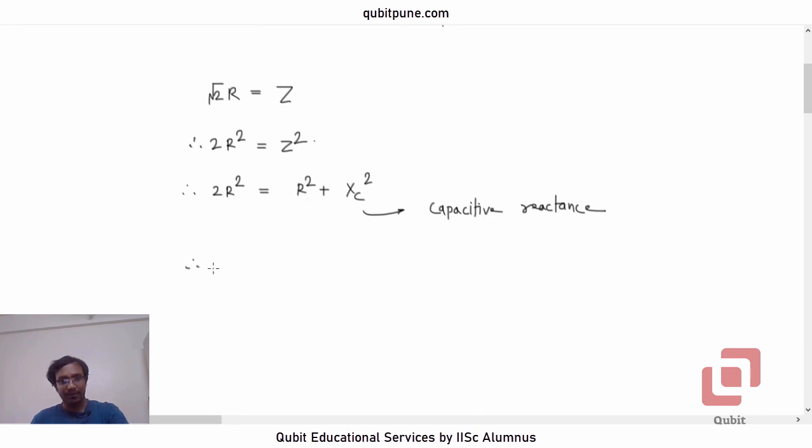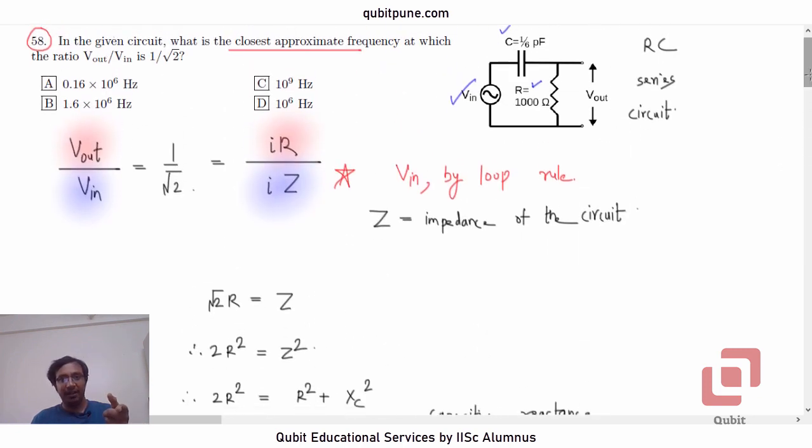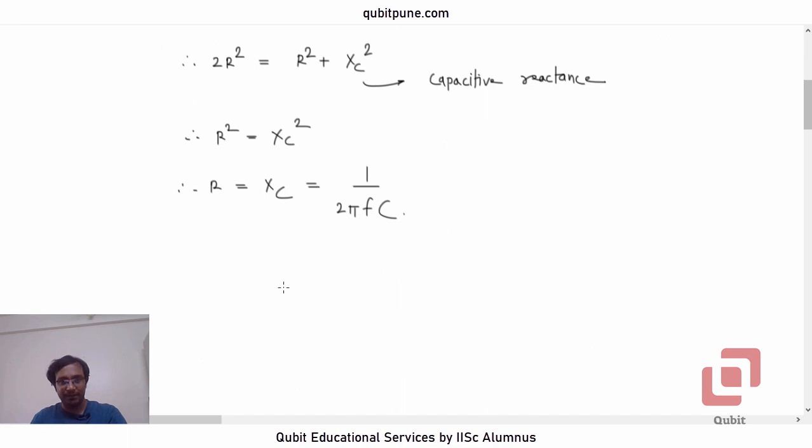The formula for XC is 1 upon 2 pi FC. So, now we have everything that we need to calculate F. We want F, closest approximate frequency. So, we want F in Hertz. So, to calculate F, it is 1 upon 2 pi RC.